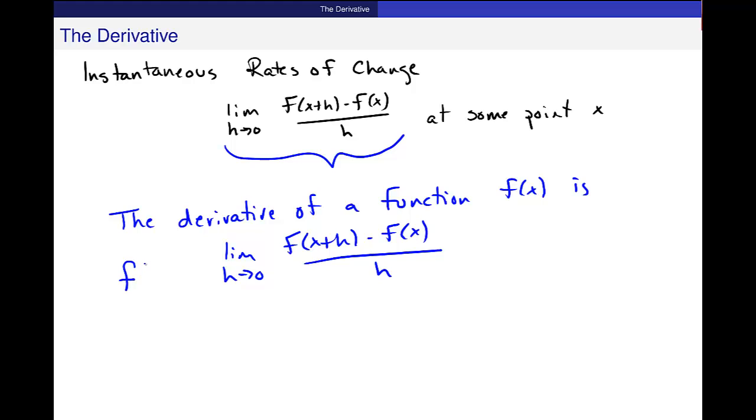We write it as an f, the function, the original function, and a little apostrophe right there after the function. And this apostrophe we read as prime. So I read this out loud f prime of x, or the first derivative of x.